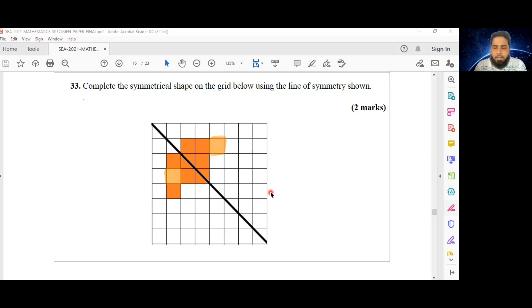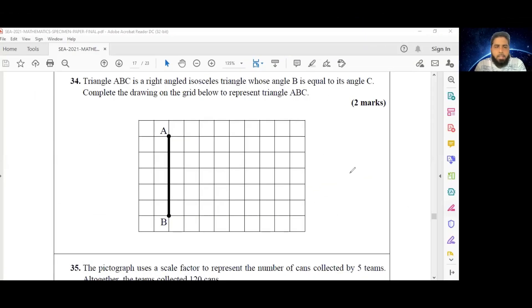Here we are with number 34, which reads: triangle ABC is a right angled isosceles triangle whose angle B is equal to its angle C. Complete the drawing on the grid below to represent triangle ABC. So the angle B is equal to its angle C, and it's a right angle triangle.